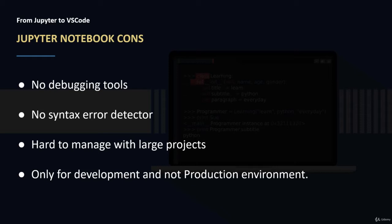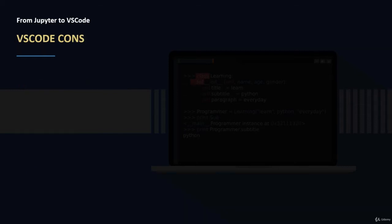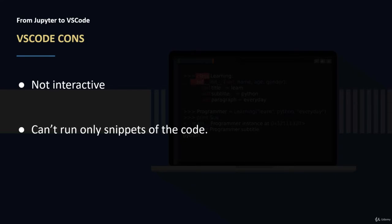What are the cons of using VS Code? First, by default VS Code is not interactive. You can install and add extensions to add interactivity and to have a better experience while using VS Code. Also in VS Code we cannot run only snippets of the code.